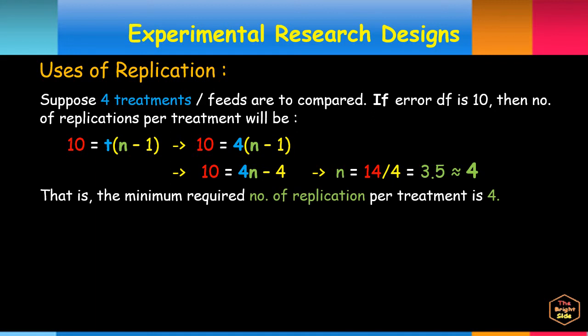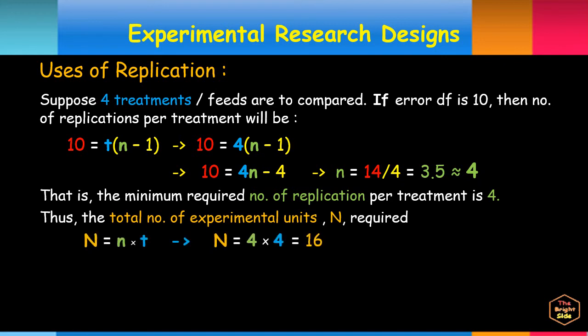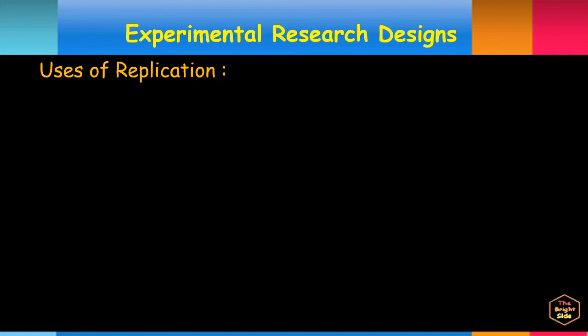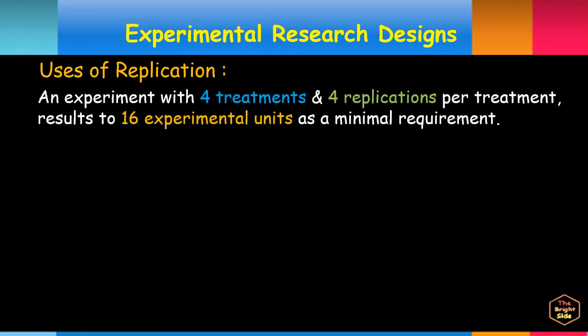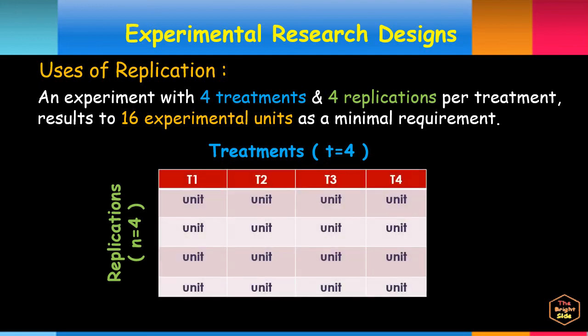In this experimental research with four treatments and four replications per treatment, we can determine the total number of experimental units. It's 4 times 4 equals 16 experimental units. Here is an illustration of an experiment with 4 treatments, 4 replications per treatment, which results to 16 experimental units required minimum.